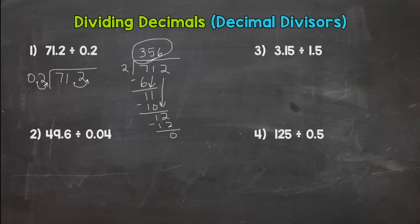So 356 is my quotient. To recap: always check if your divisor is whole. If not, you need to make it whole. Do the same thing to the inside and outside, then go through your long division process.